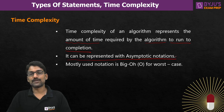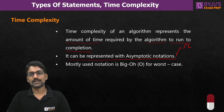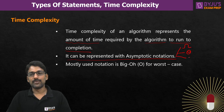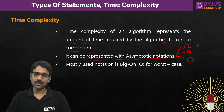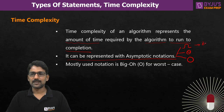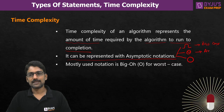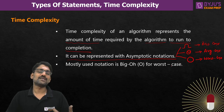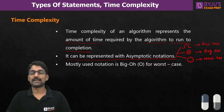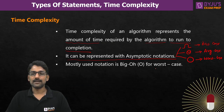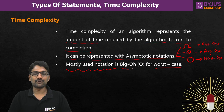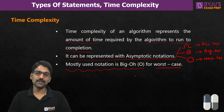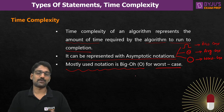How do we represent time complexity? It is represented with asymptotic notations. We have Omega notation, Theta notation, Big O notation, and small o. Omega represents best-case time complexity, Theta represents average case, and Big O represents worst-case time complexity. Generally, worst case is the parameter used, so the most used notation is Big O for time and space complexity representation.